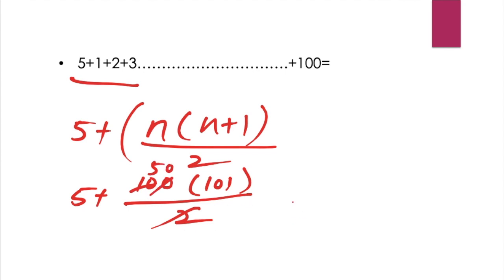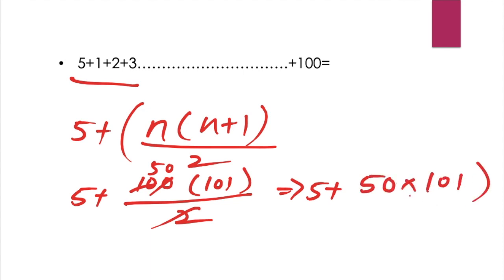And the answer is 5 plus 50 into 101. So, if we have 2, we will have 50. So the result is 5 plus 50 into 101 divided by 2.